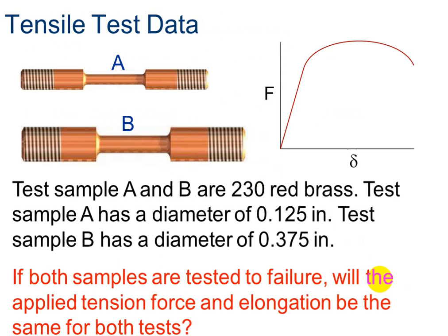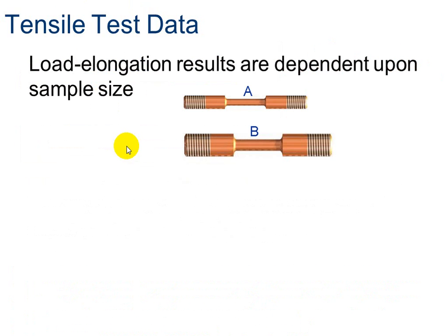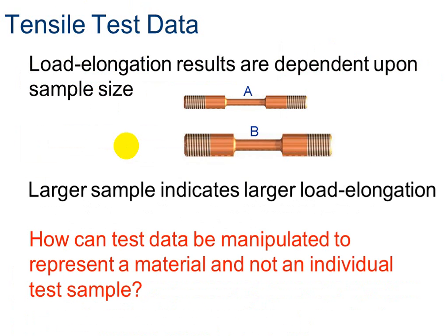Let's look at test sample A and B — they're both 230 red brass, but one is smaller than the other. Test sample A has a diameter of 0.125 inches, and test sample B has a diameter of 0.375 inches. If both samples are tested to failure, will the applied tension force and elongation be the same? No, they will not. Load and elongation results are dependent on your sample size — the larger sample will indicate a larger load and elongation.